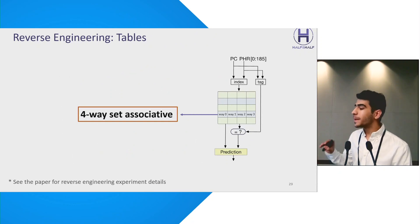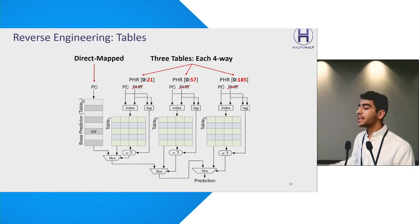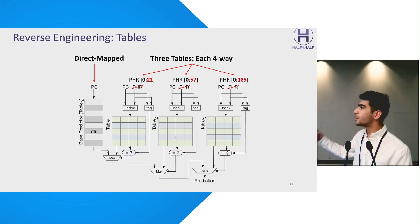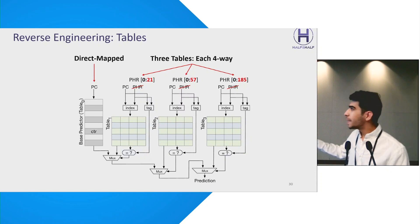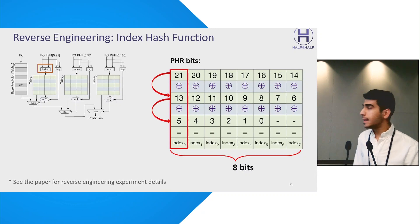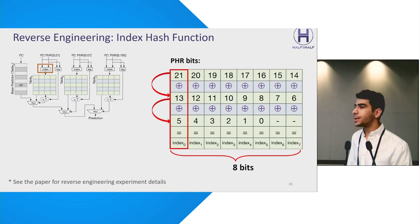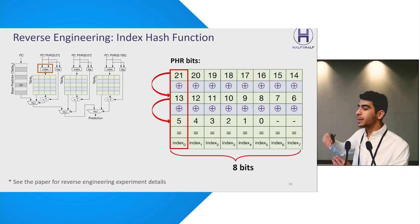Based on carefully crafted and complicated experiments, we discovered that each global predictor table employs a cache-like four-way set-associative structure. We identified not one but three global predictor tables alongside the local predictor, each of which is four-way set-associative. Each table uses a certain portion of the PHR: table one uses PHR bits 0 to 21, the second uses 0 to 57, and so on. In the index hash function of global predictors, the PHR is run through a hash mechanism that reduces it to 8 bits. For example, in table one, bits 21, 13, and 5 of the PHR are XORed together to determine bit 0 of the index. This folding process applies to all tables within the branch predictor.